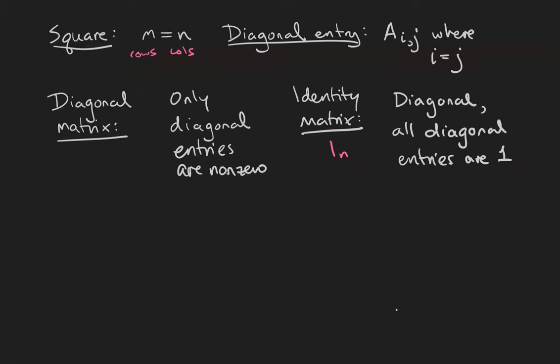And a diagonal matrix is one where only the diagonal entries are allowed to not be 0. Every off diagonal entry is 0. The identity matrix, denoted i sub n, is a diagonal matrix whose diagonal entries are all equal to 1.